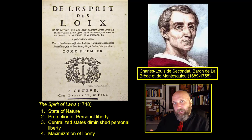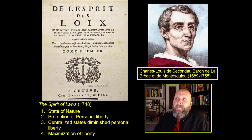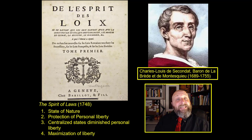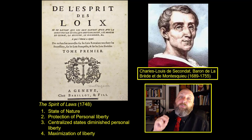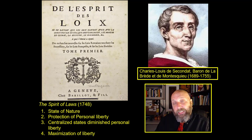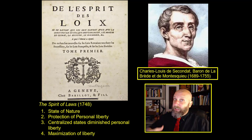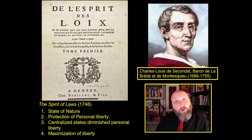So government comes in. A government is there as a check on society. It is government's job to make sure — not that everyone is equal — but that everyone is free. This is our second point according to Baron de Montesquieu: the point of government is the protection of personal liberty, the protection of personal freedom. People are born free; society makes them unfree. It is the job of government to make them free again — to maximize personal liberty.